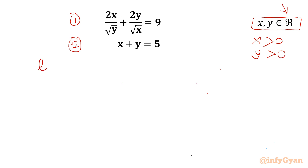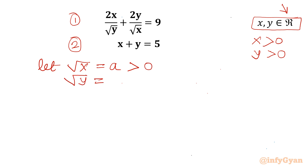Now let us use substitution. I will write root x equal to a, so a must be positive, and root y equal to b, with b greater than 0. From this, x equals a squared and y equals b squared.